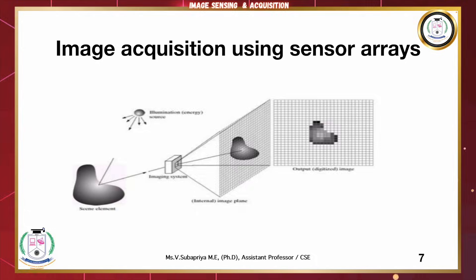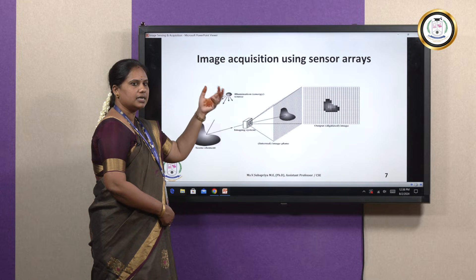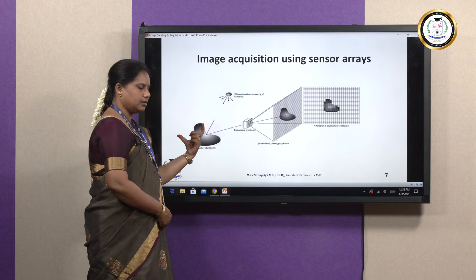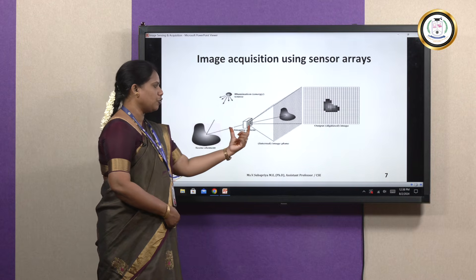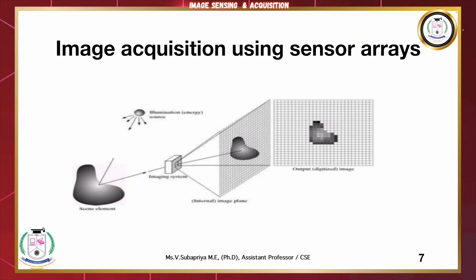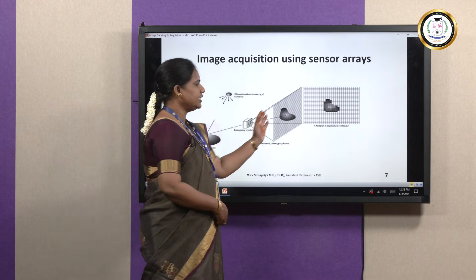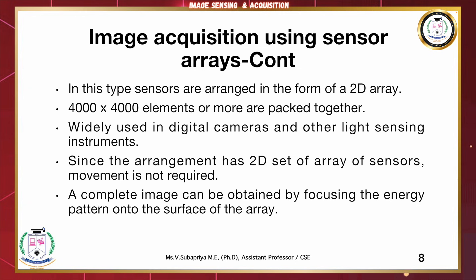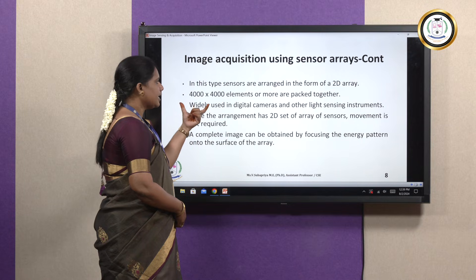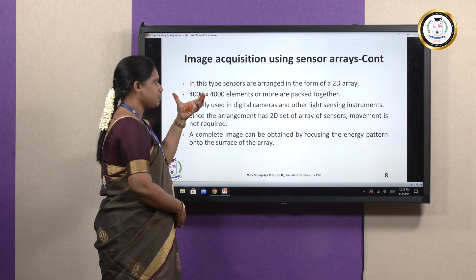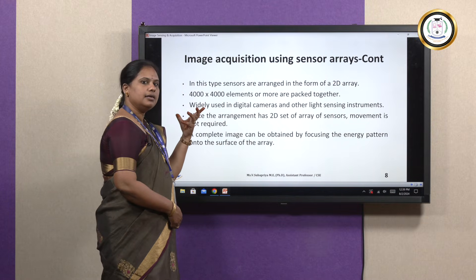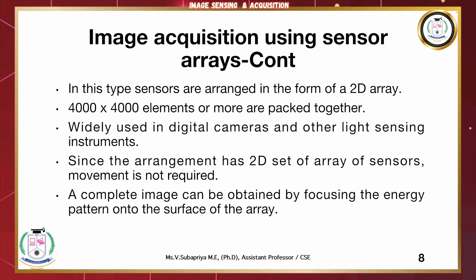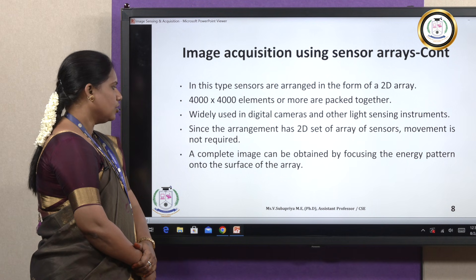Image acquisition using an array of sensors works as follows. Light illuminated from a natural source — such as the sun or an electromagnetic source like radar or IR rays — falls on the object to be imaged, and the reflected light falls on an imaging system. In front of the imaging system, a lens projects the image onto an image plane, which is then converted into a digitized image. This type of sensor is used for 2D images and can also be used for 3D images. The array can be, for example, 4000 x 4000 sensors. It is widely used in digital cameras. Since the arrangement has a 2D set of array sensors, movement is not required, and a complete image can be obtained by focusing the energy pattern onto the surface of the array.